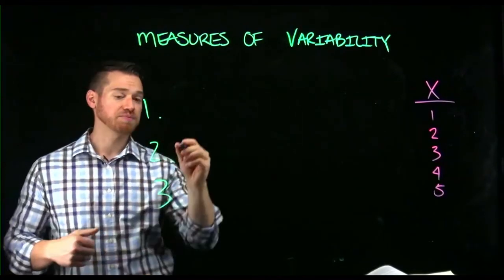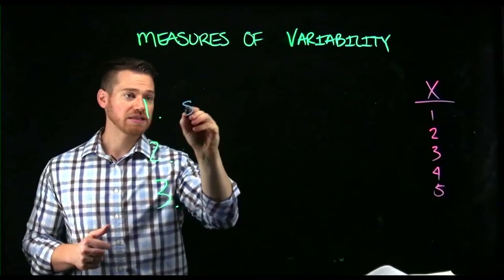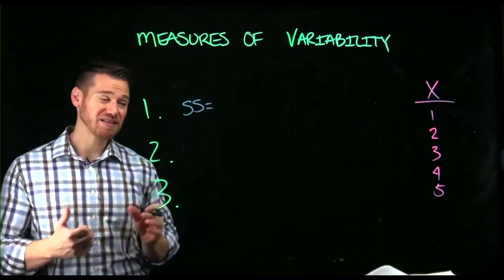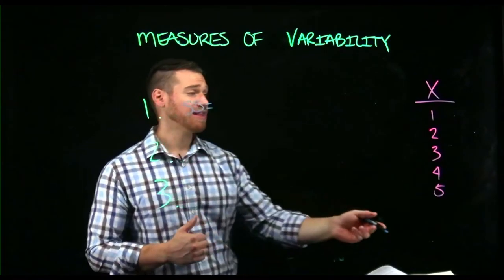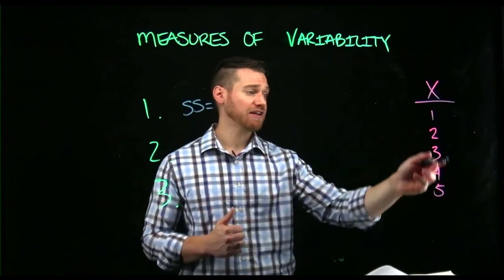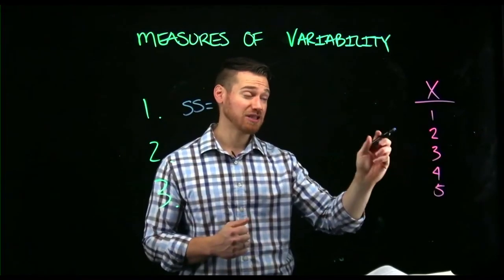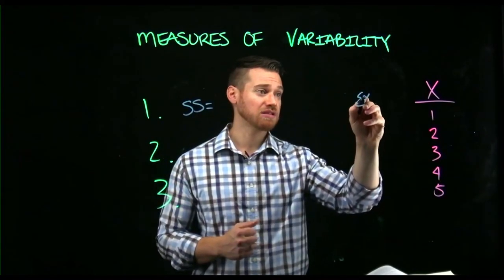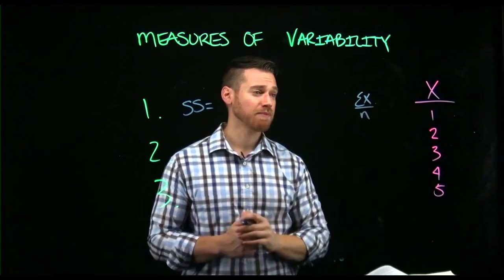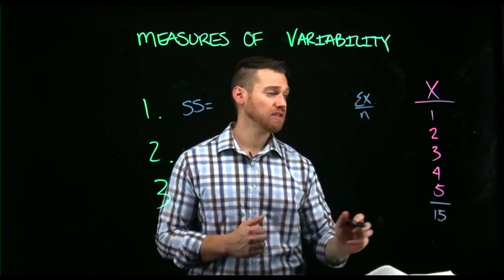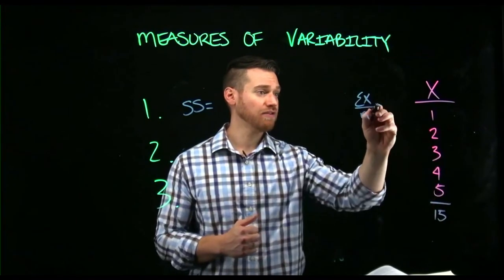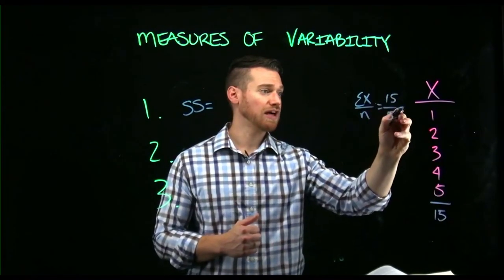So if we do SS first, we have to get the deviation scores, which means we start by getting the average. So here we would get the average of our scores. So we have five, ten, fifteen, and we have five scores. So the mean is three, because remember, the mean is sum of scores over N, right? Here, the sum of the scores is 15. The number of scores is five. So this is 15 over five, three.